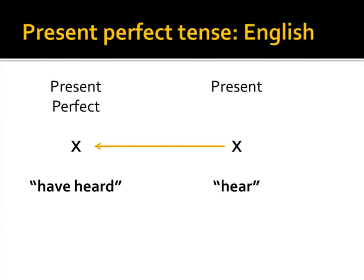What does the present perfect tense actually do? If we think of it as a continuum between the present moment and events that happen in the past, the present perfect tense is one step into the past. Other tenses, like the past perfect tense, will be two steps into the past. The present perfect tense describes something that has happened in the past and the action has been completed — it's done, perfected — and the action doesn't continue over into the present moment.